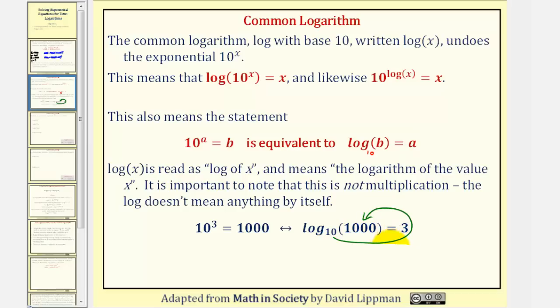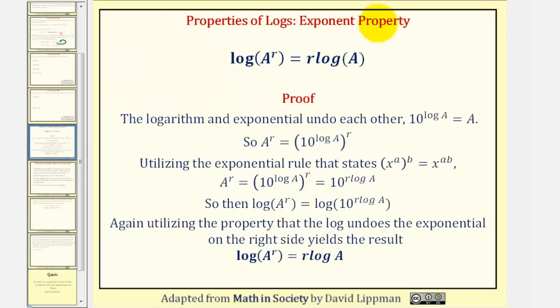But there is one property of logarithms that we have to review before we can go back and solve our exponential equation. And this is the exponent property, sometimes called the power property of logarithms, which tells us that log(aʳ) = r·log(a). Notice what's happened here is the exponent of r has been moved to the front, so now we have a product of r and log(a).